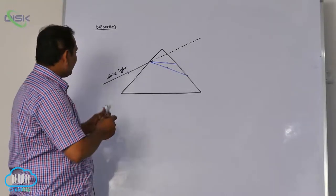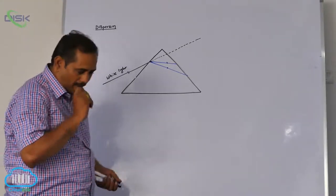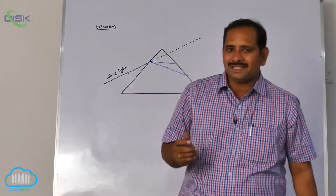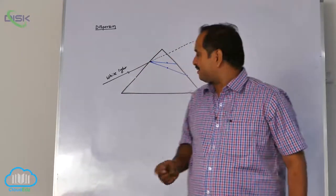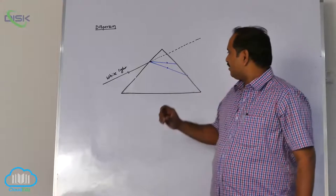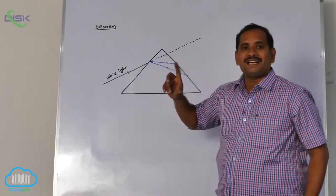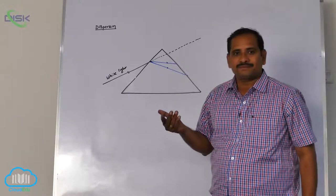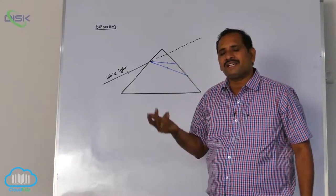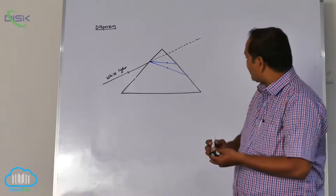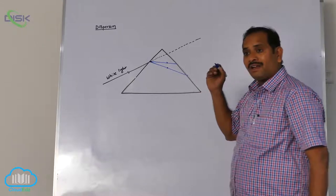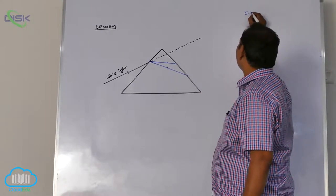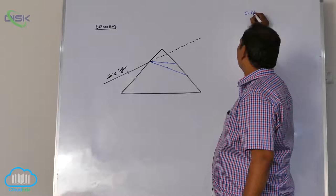But your light is white light. White light is a composite of colors — it is a mixture of colors. In that mixture, different colors have different wavelengths, and different wavelengths mean different velocities, as given by c = νλ.